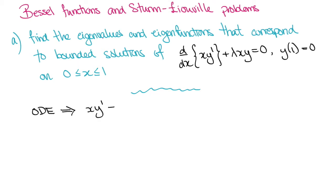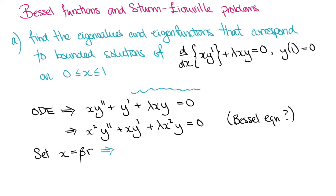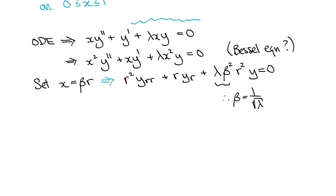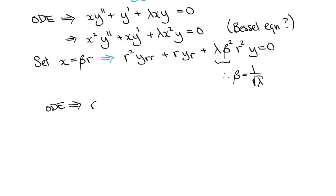If we expand the ODE, we see that it almost looks like the Bessel equation, except the coefficient of the x squared y term should be 1. Well, what we can do is we can rescale the x variable with an unknown beta. Substituting this into the equation, we see that if beta is 1 over the square root of lambda, then the ODE indeed reduces down to the Bessel equation of order n being 0.